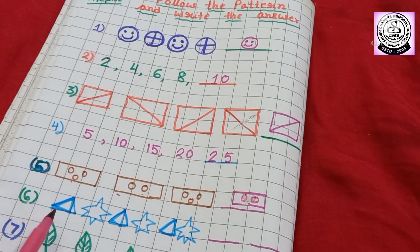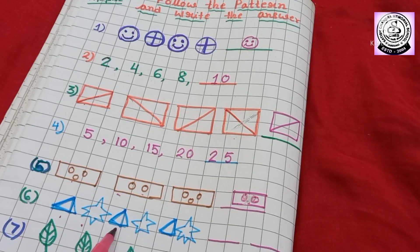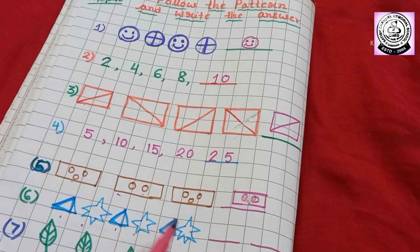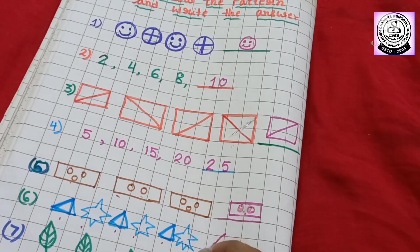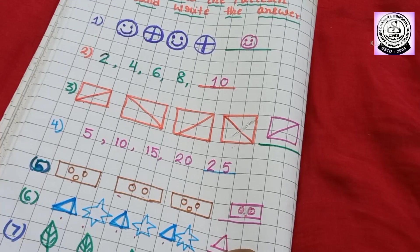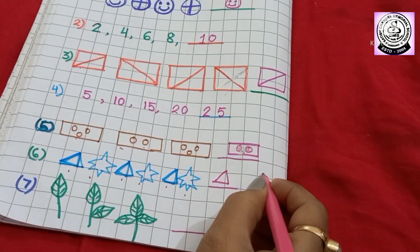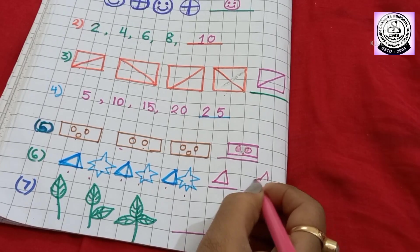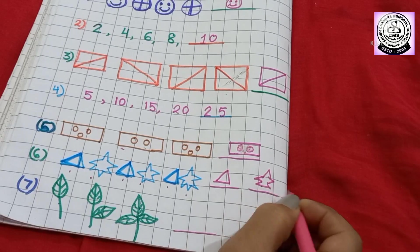Then, number 6. First, I have drawn 1 triangle, then 1 star. Again, 1 triangle, 1 star, 1 triangle and 1 star. Then, you have to draw 1 triangle and 1 star also. Like this.